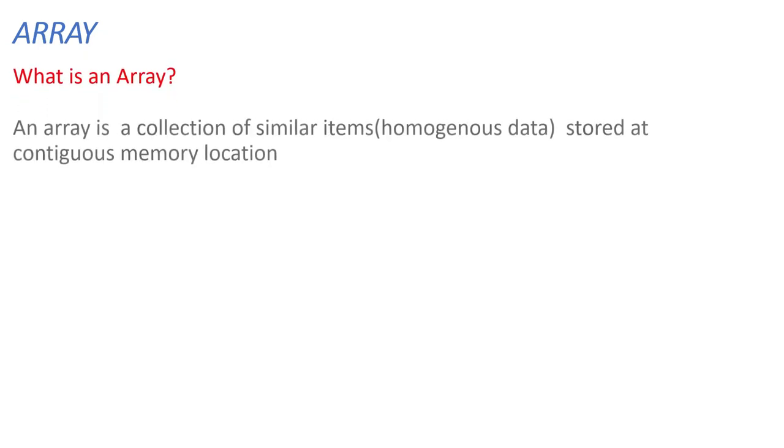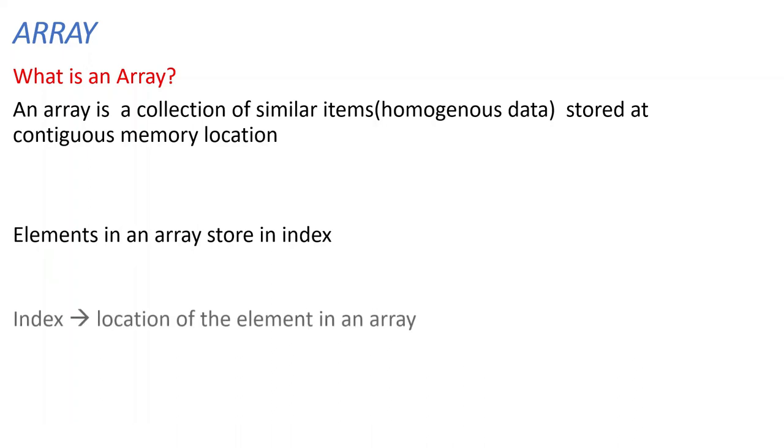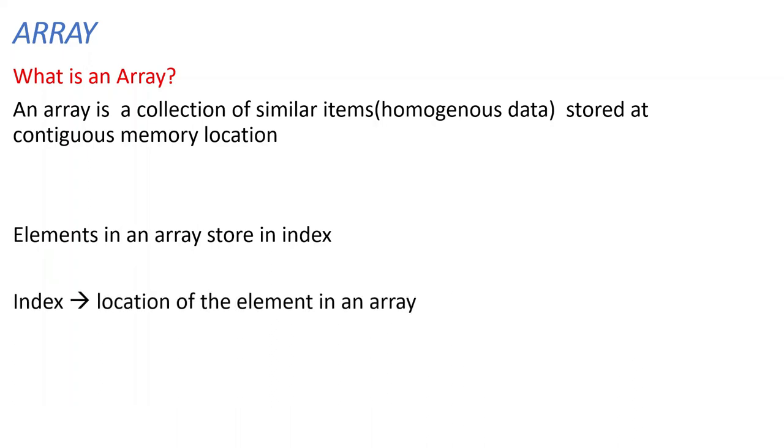Move forward to arrays. What is an array? An array is a collection of similar items, homogenous data stored as contiguous memory locations. Elements in an array are stored in index. Index is the location of elements in an array, between 0 to size minus 1.